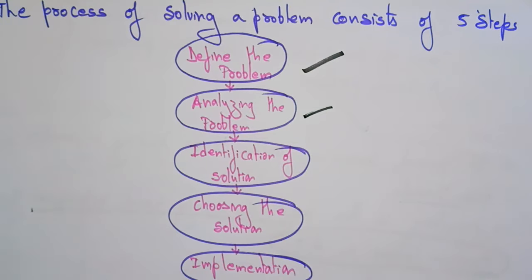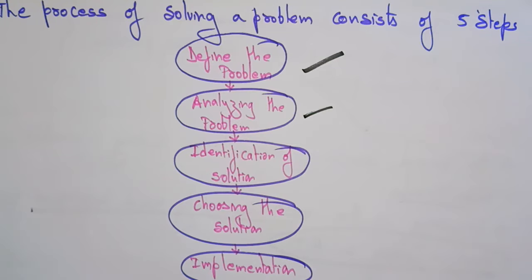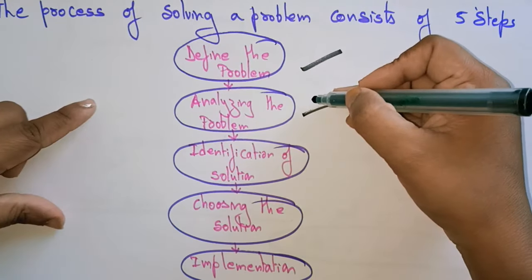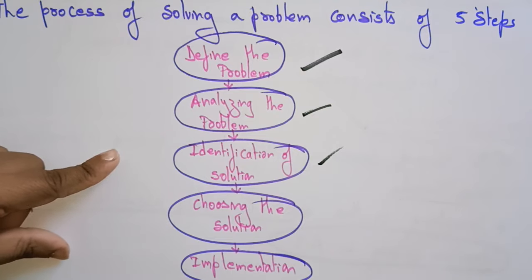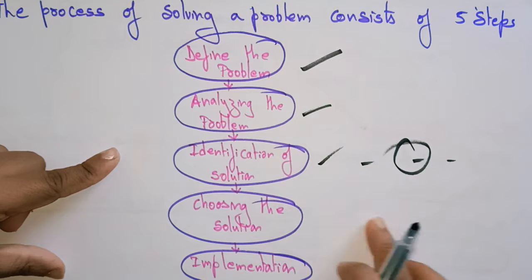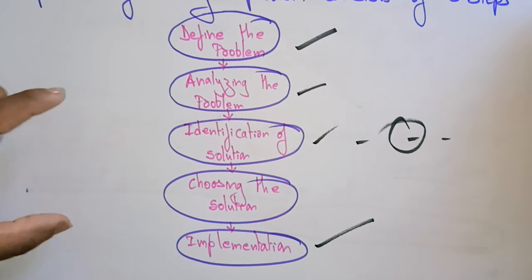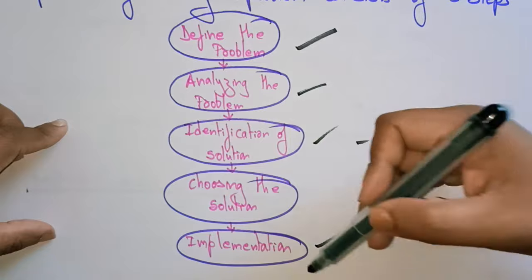Note that 'problem' here doesn't mean a drawback or something bad — it simply means something you are trying to find or solve. So first define the problem, then analyze it. Next is identification of solutions — considering different methods. After that, choose the best solution and then implement it. These are the steps: define, analyze, identify solutions, choose, and implement.